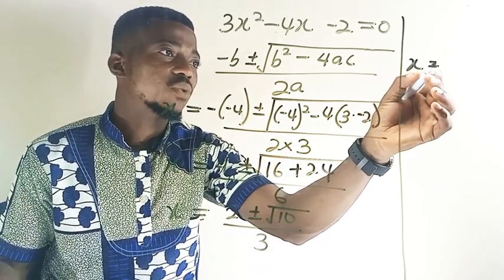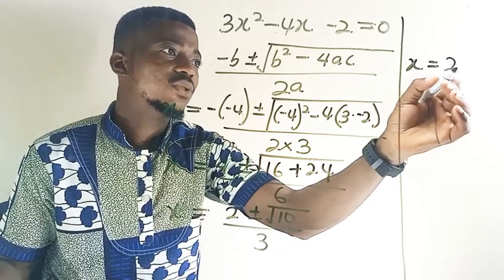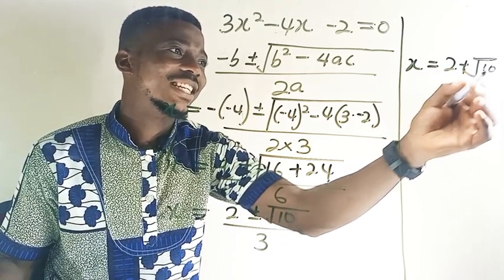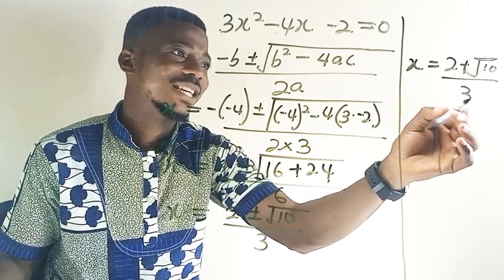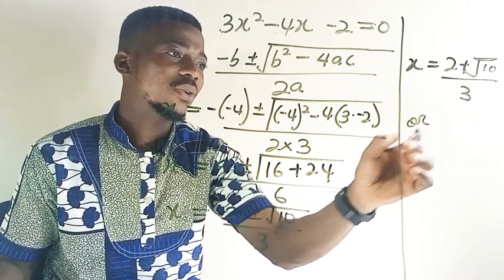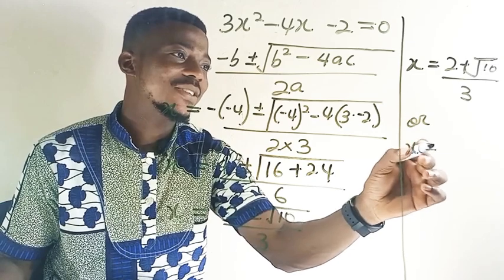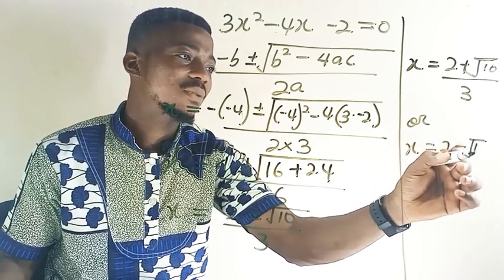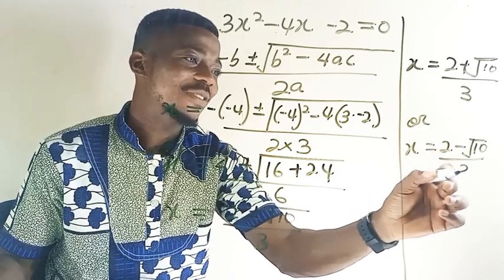So the first root of the equation, that is x will be equal to 2 plus root 10 all over 3, or x is equal to 2 minus root 10 over 3.